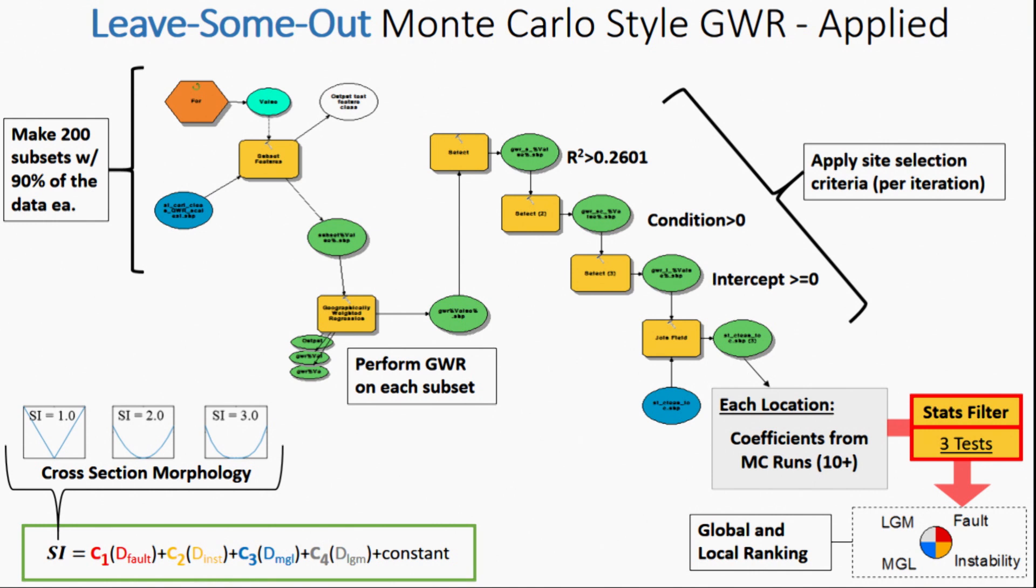We then took those distributions, because we did this 200 times. At each location we got coefficients from multiple runs, and we put those distributions into our statistical filter, which allowed us to then rank these globally and locally.